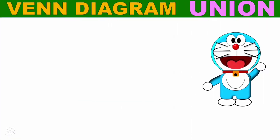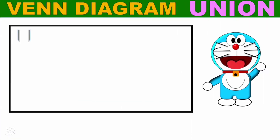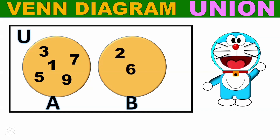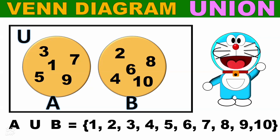Now I will represent this in a Venn diagram. Set A contains 1, 3, 5, 7, 9 and set B contains 2, 4, 6, 8, 10. Therefore, A∪B equals the elements in set A and the elements of set B combined without repeating. So A∪B = {1, 2, 3, 4, 5, 6, 7, 8, 9, 10}.